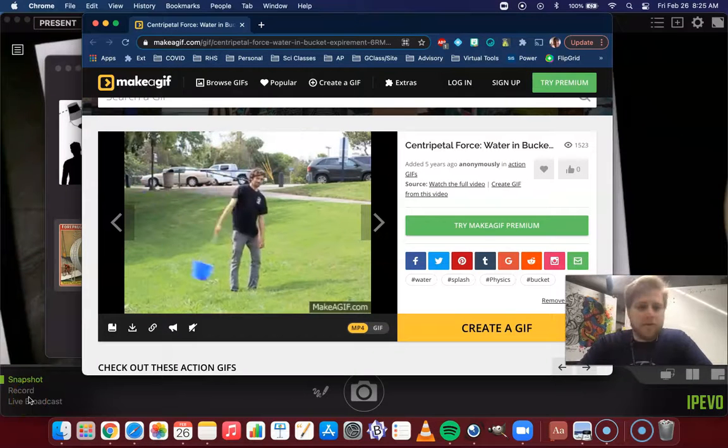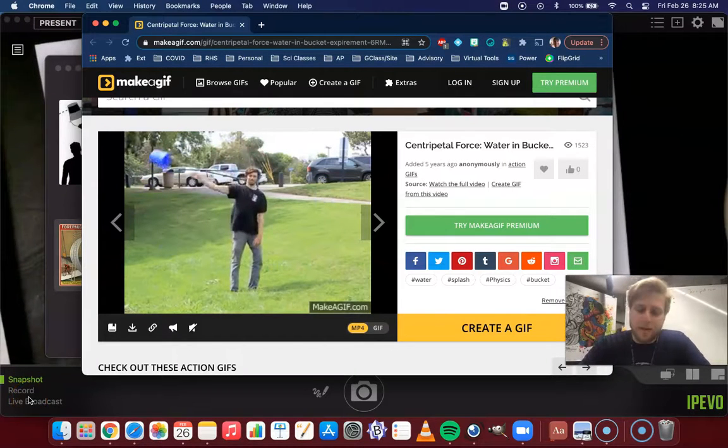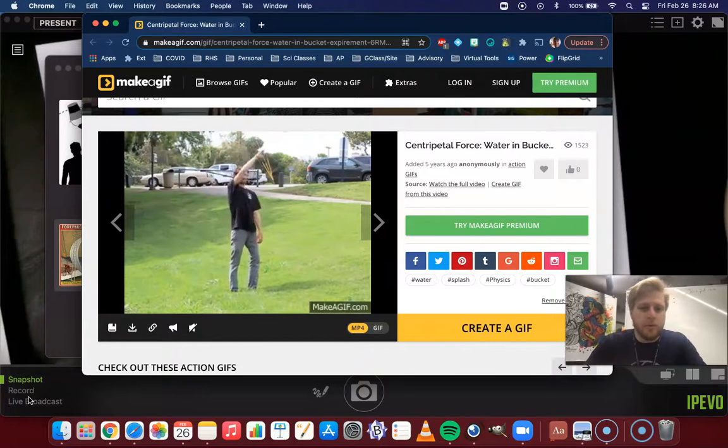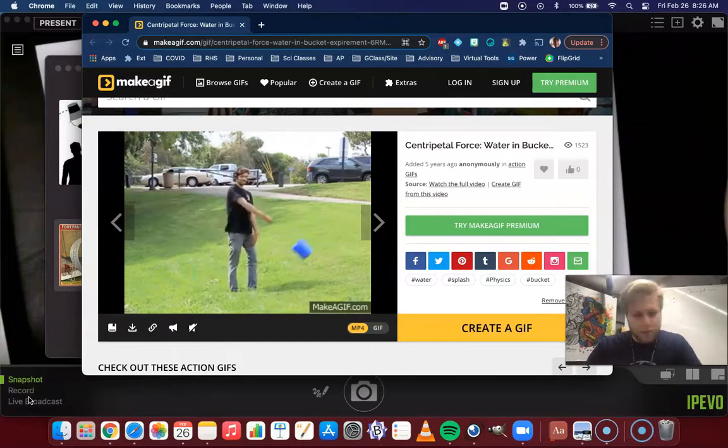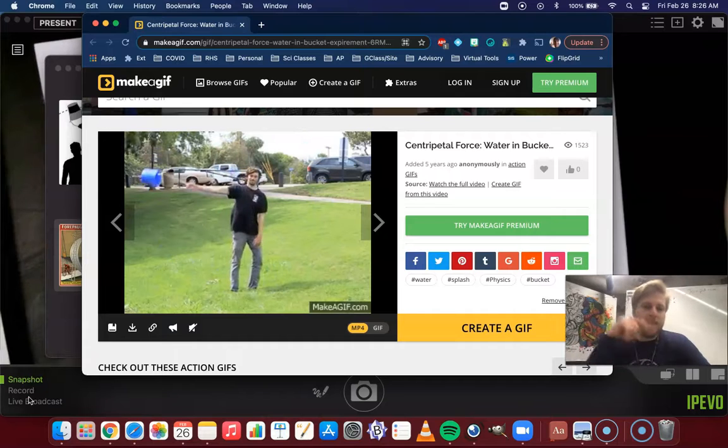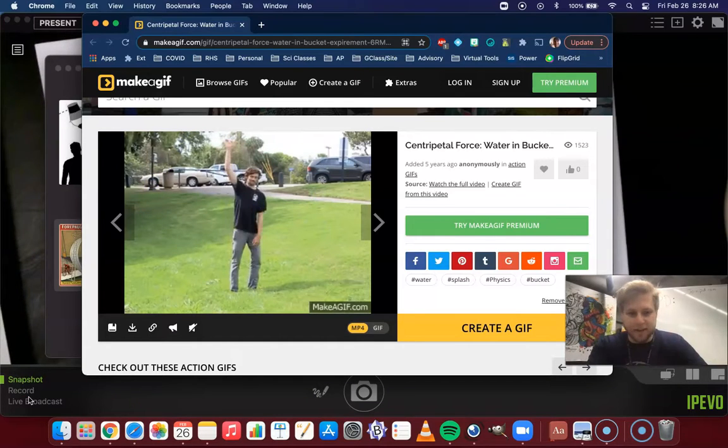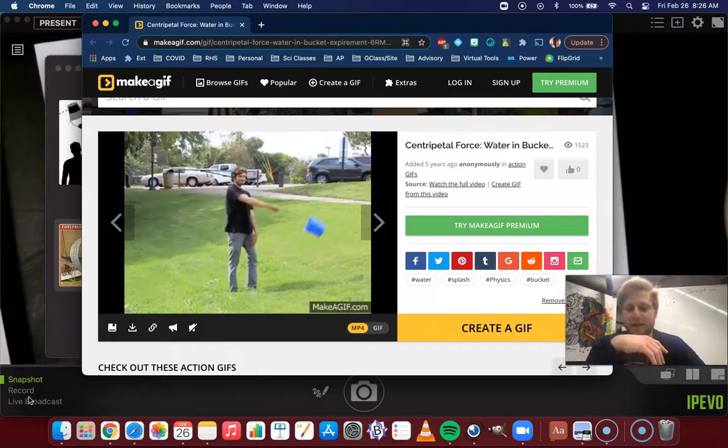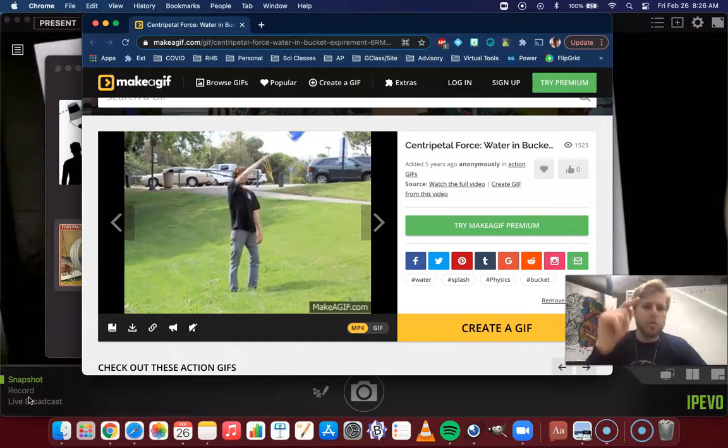All right scholars, today we're going to tackle a few centripetal force examples. We're going to start with a classic physics example, which is the old water over the head in a bucket trick. Very snappy name. So the question we want to investigate here is this person, you can't tell exactly, but they have water in that bucket. We'll do this demonstration in class as well.